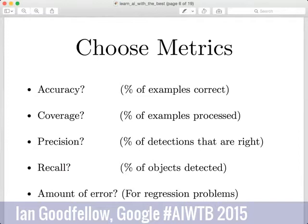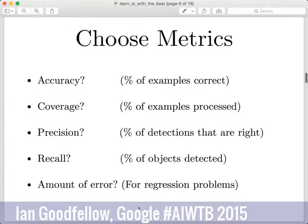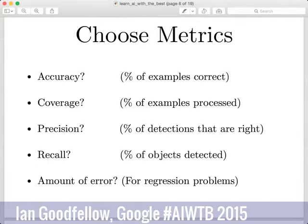When we set our goals for the Street View pipeline, we set them in terms of both accuracy and coverage — we wanted human-level accuracy at a specific level of coverage sufficient to justify the investment in the pipeline. For other applications besides classification, like regression, you need to use a metric based on the size of prediction errors, like mean squared error or mean absolute error.